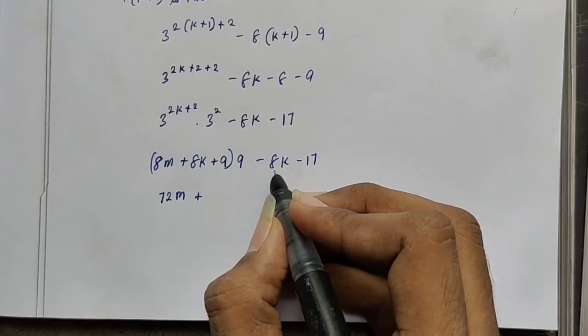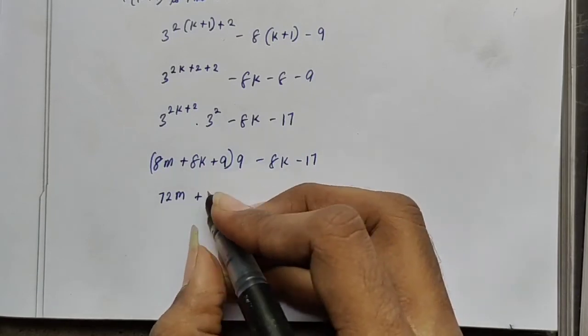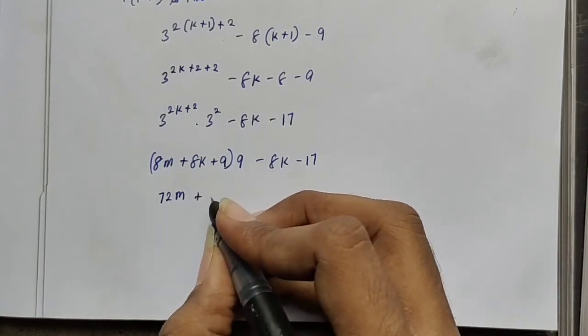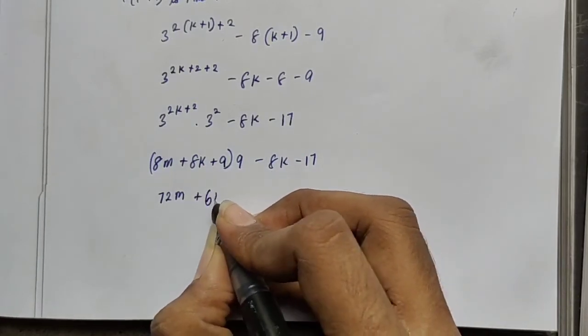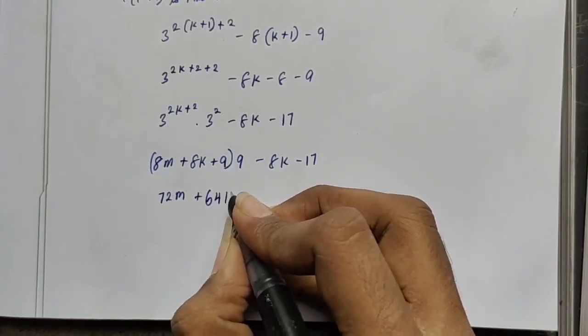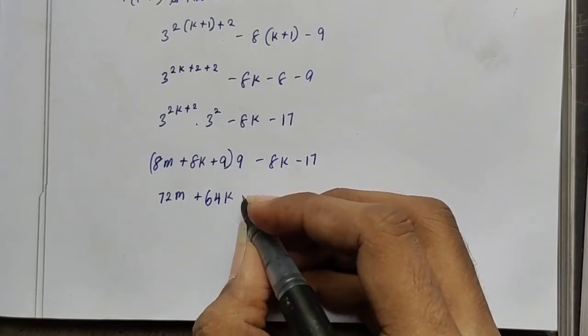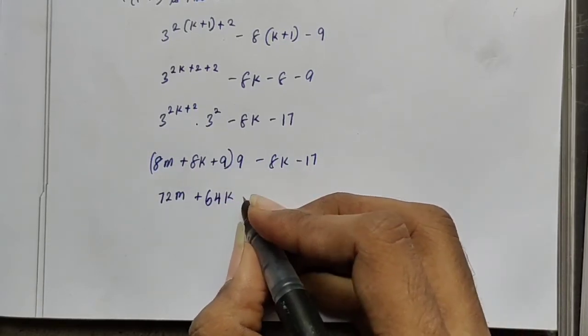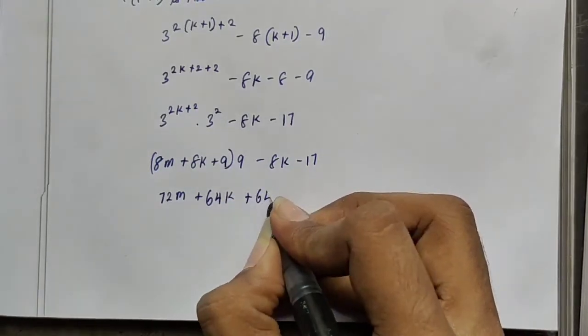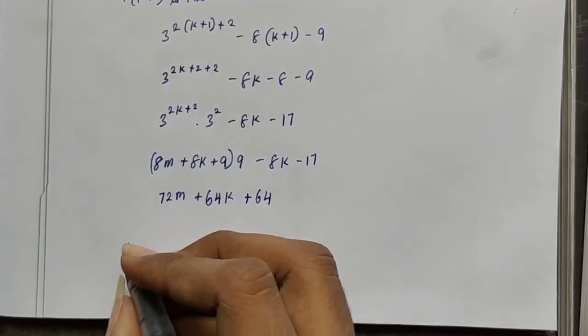So we have 72m plus 8 minus 8k, giving 64k plus 9 into 9 is 81. Minus 17 is 64. So we can factor out 8: 8 times 9m plus 8k plus 8, which is divisible by 8.